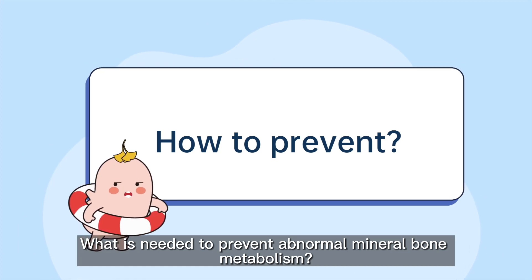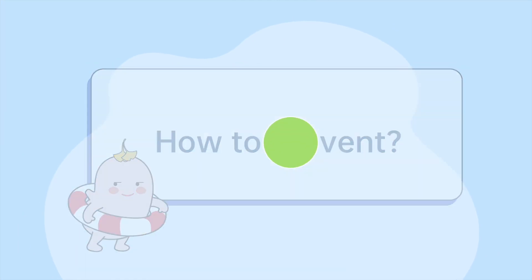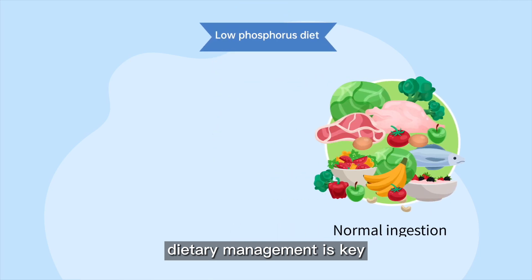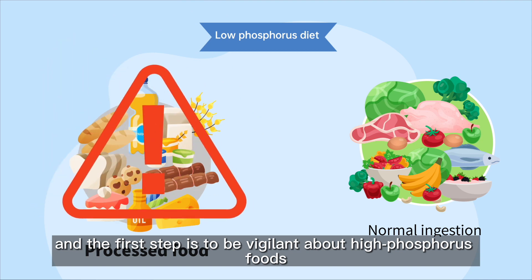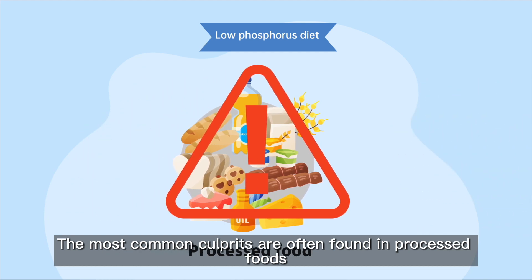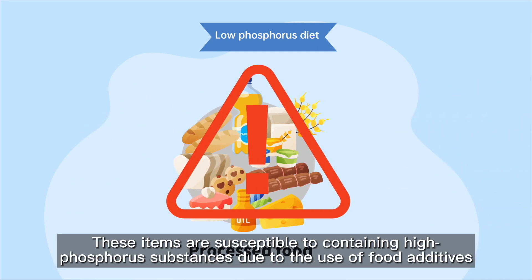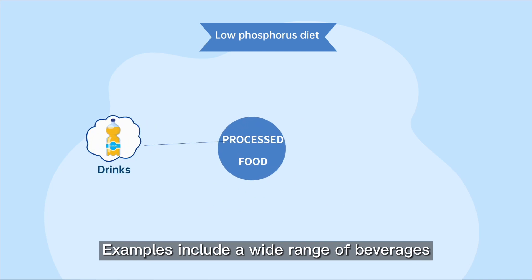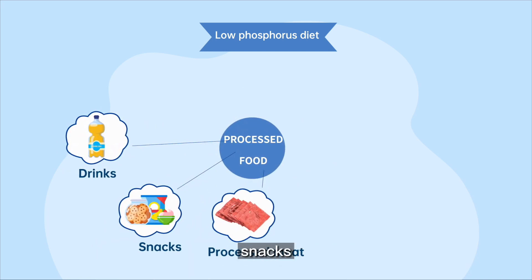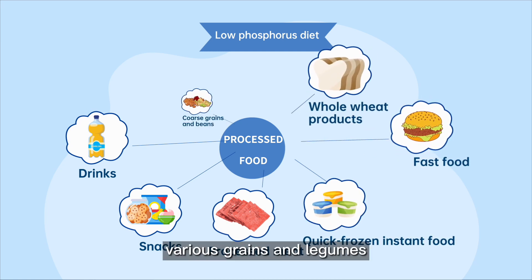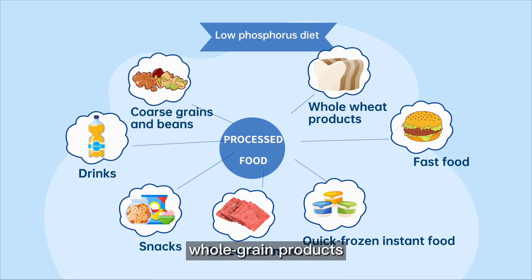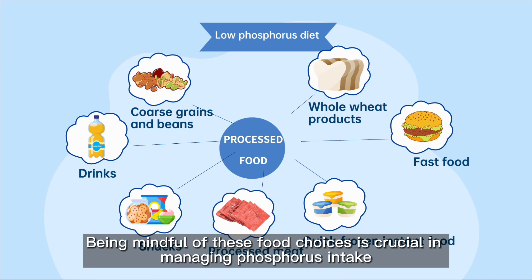What is needed to prevent abnormal mineral bone metabolism? To start, dietary management is key. It's essential to adopt a low-phosphorus diet, and the first step is to be vigilant about high-phosphorus foods. The most common culprits are often found in processed foods, which are susceptible to containing high-phosphorus substances due to the use of food additives. Examples include a wide range of beverages, snacks, processed meat products, frozen instant meals, fast food options, various grains and legumes, whole grain products, and nuts, among others. Being mindful of these food choices is crucial in managing phosphorus intake.